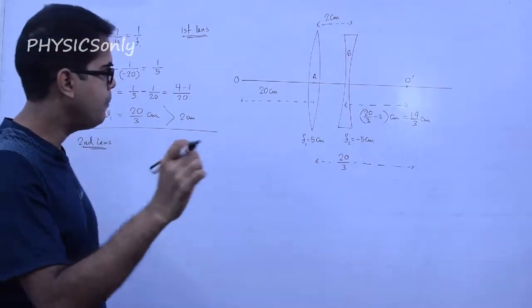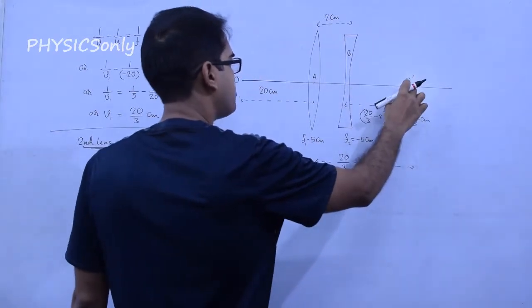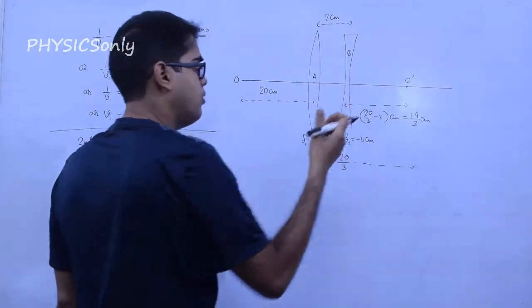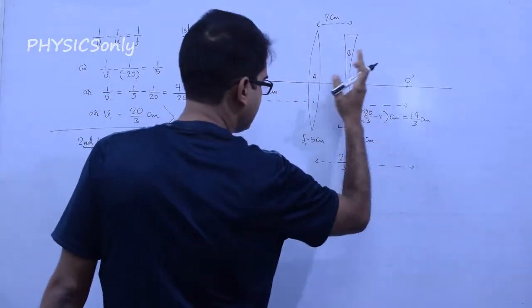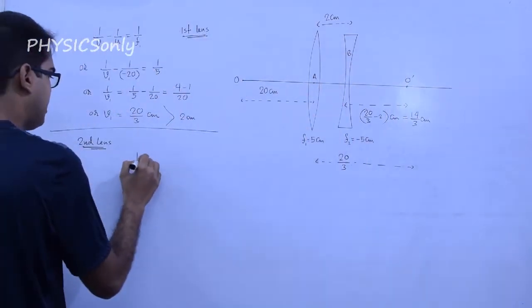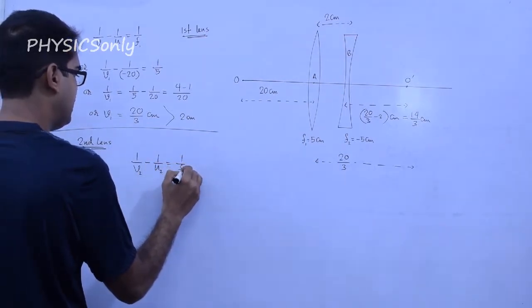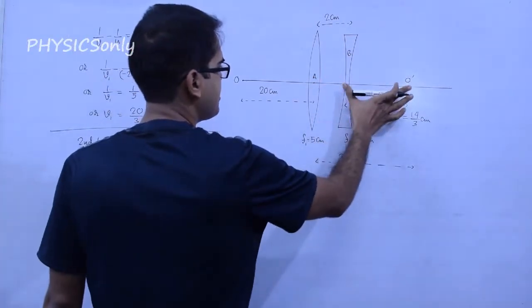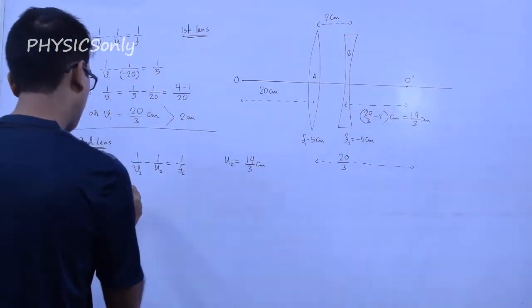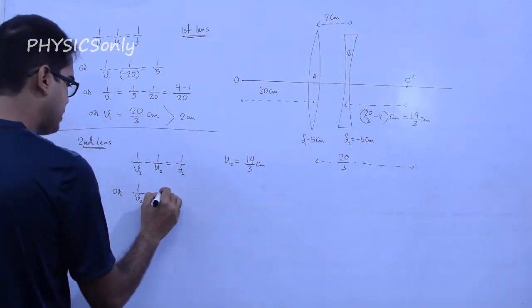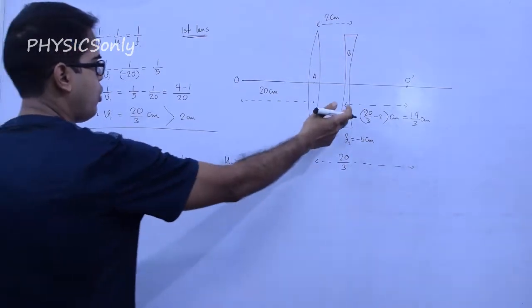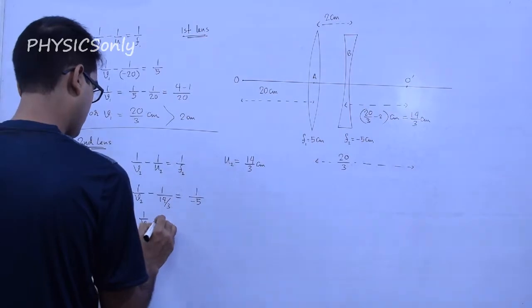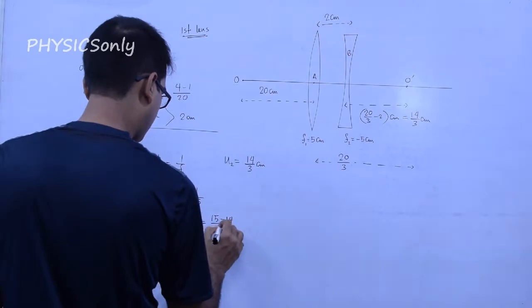Now for the second lens, the concave lens. The virtual object distance for the second lens is 14/3 cm. Since it is a virtual object on the right side, U2 equals plus 14/3 cm. F2 for the concave lens is minus 5 cm. So: 1/V2 minus 1/(14/3) equals 1/(minus 5).